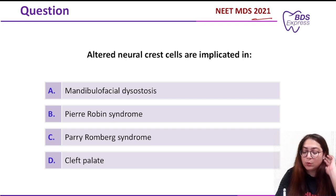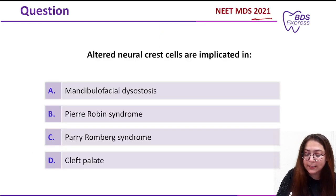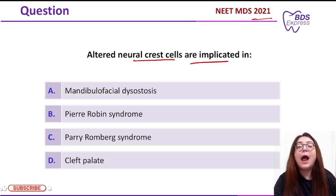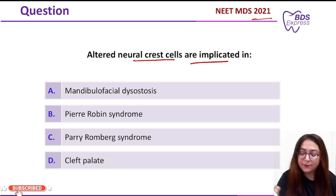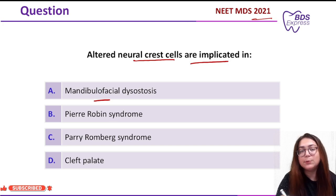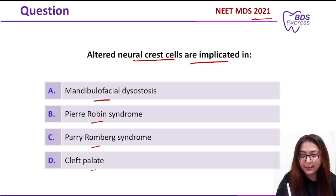The question was: altered neural crest cells — they are implicated in which condition? The options given were mandibulofacial dysostosis, which is the other name for Treacher-Collins syndrome; Pierre Robin syndrome; Perry-Romberg syndrome; and cleft palate.